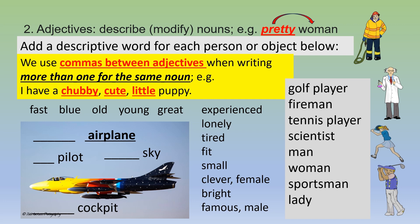So we have adjectives to choose from here: fast, blue, old, young, great, experienced, lonely, tired, fit, small, clever, female, bright, famous and male. We have a picture of an airplane with gaps — you can decide what words to put there. If a word is not in the list and you still want to use it, feel free. On the right-hand side we have the fireman, the scientist, the tennis player and the golf player.